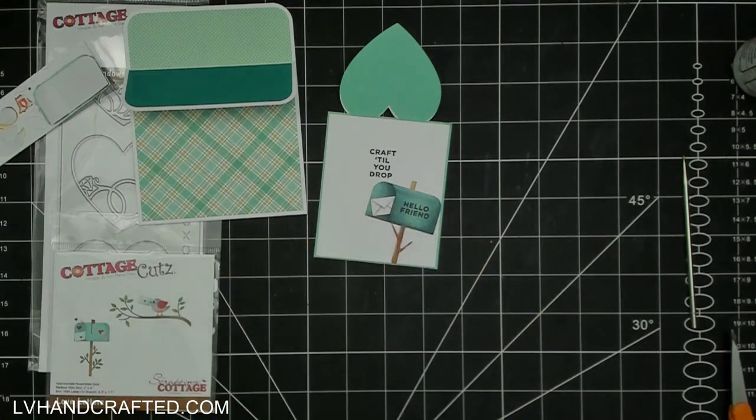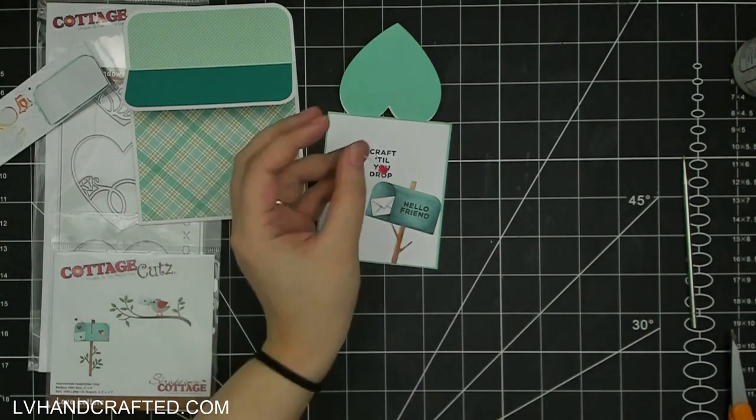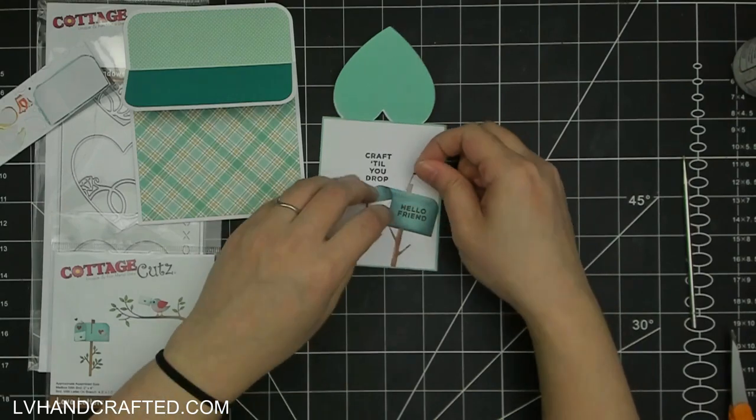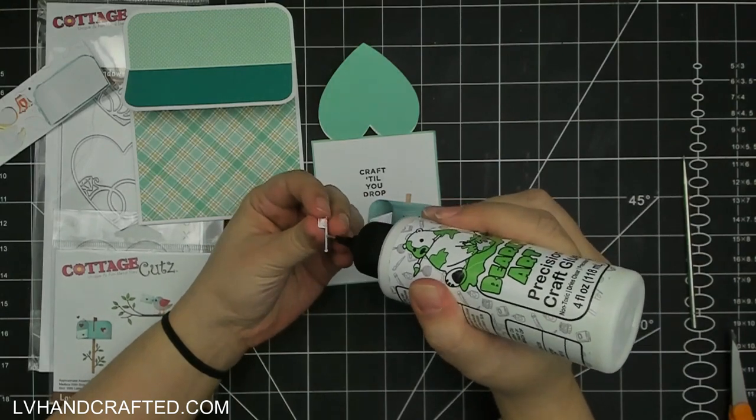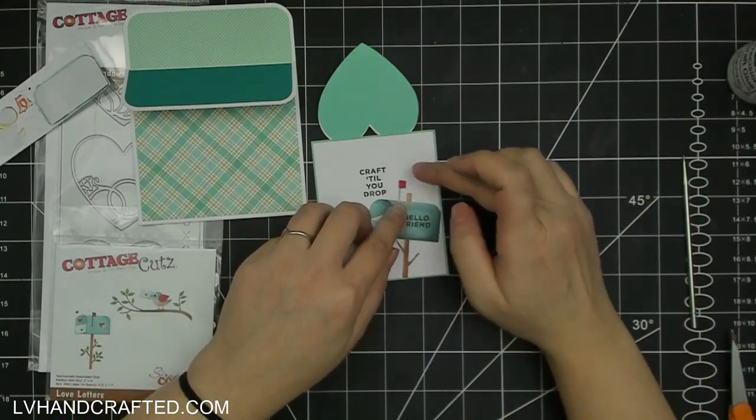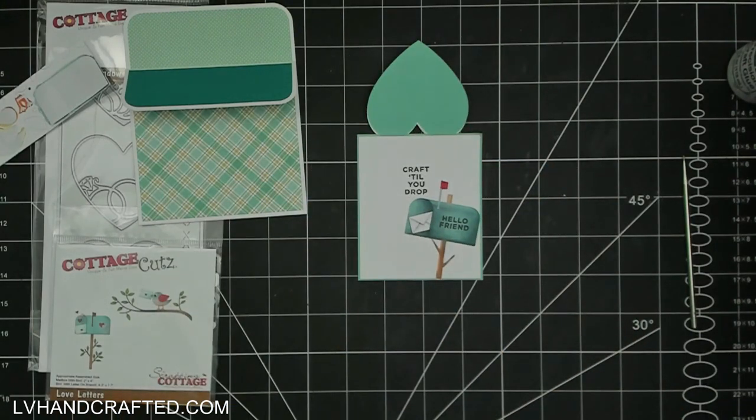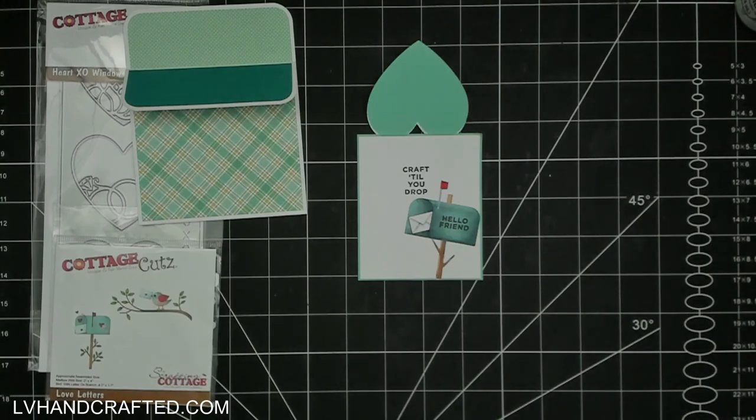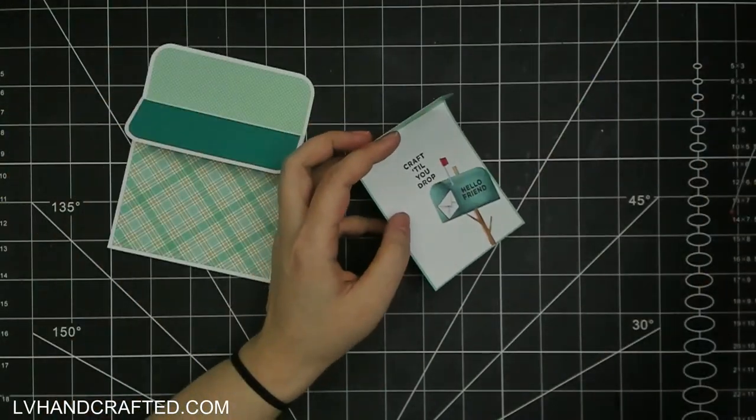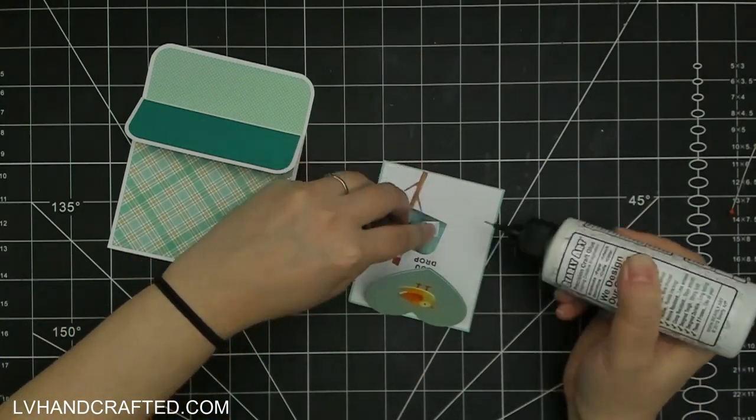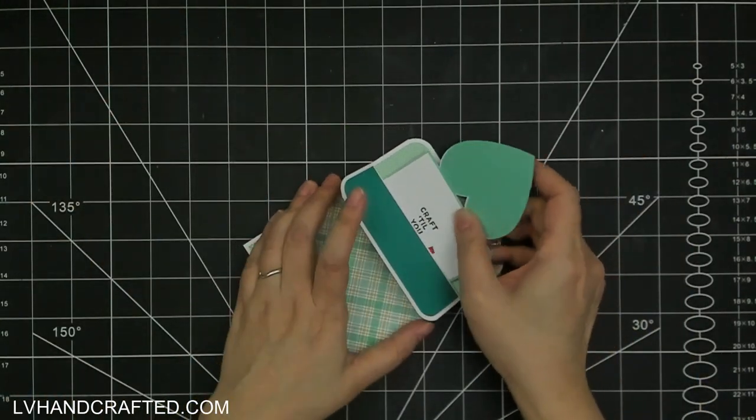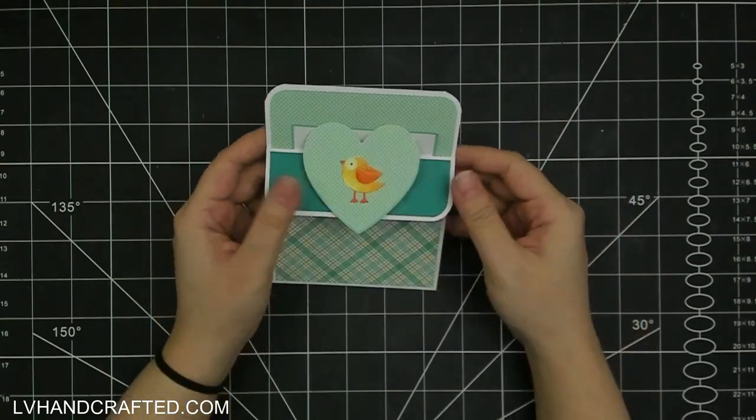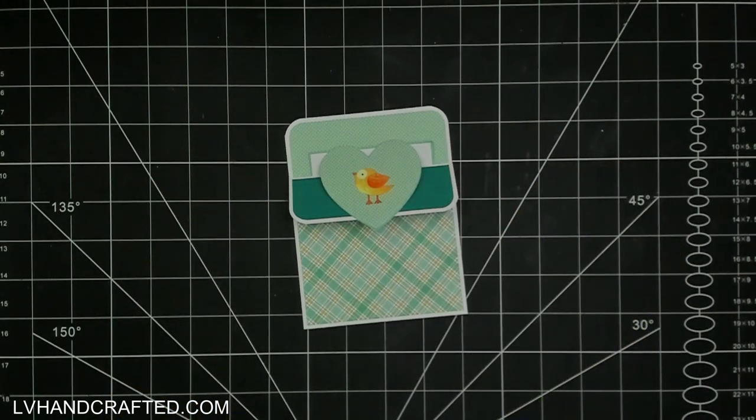In this case this is just going to be a just because card for a fellow crafter so that having craft till you drop would be really fun and it's a nice little hidden message that you get once you flip the heart up and pull out the insert and the mailbox there's just so many little details I love the little flag that's the indicator of I think it technically indicates whether you're sending mail out I believe that lets the postal worker know that you've got mail that you want to send but it's nice that the mailbox has a slit the die actually puts in that slit so that you can do exactly what I've done here where I've tucked the letter in.